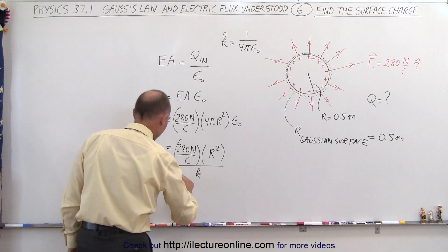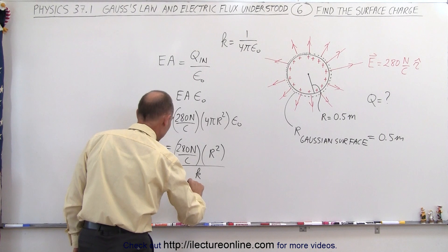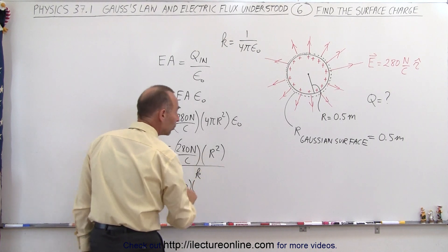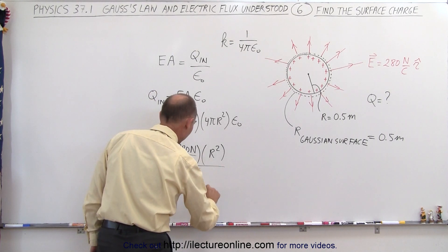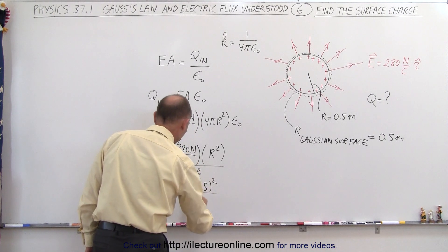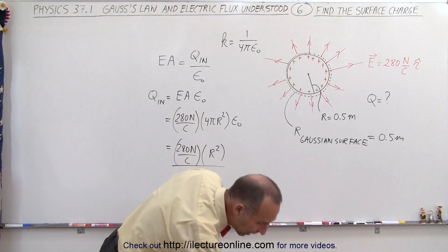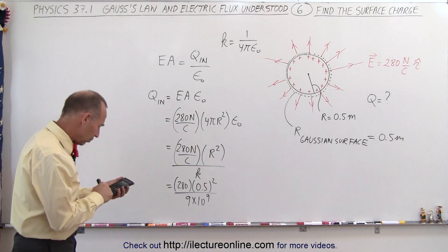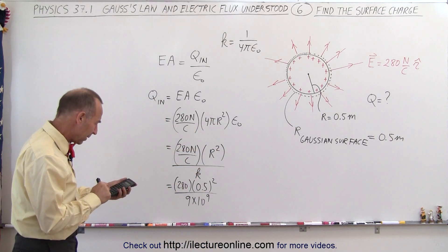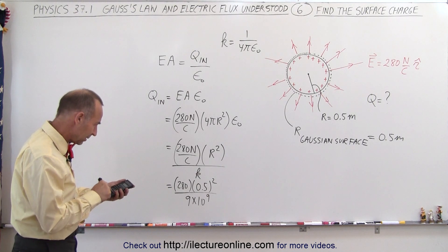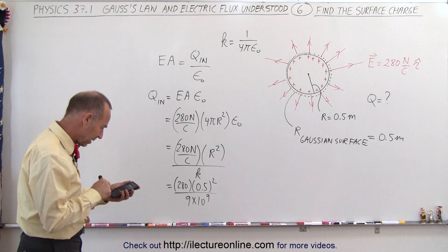And so now I can plug in the values. So this is equal to 280 times R, which is 0.5, and I have to square that, divided by 9 times 10 to the 9th, because that's the value for the constant K. So now we take 280 divided by 9 times 10 to the 9th, times 0.5 squared.